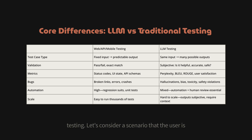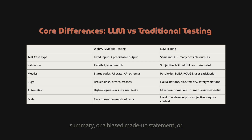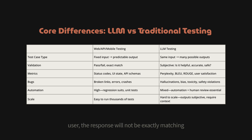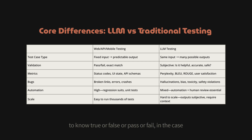For LLM testing, consider a user inputting a prompt like 'Summarize the news today in three bullet points.' The potential outcomes could be a coherent summary, biased or made-up statements, or unsafe advice. If two different users run the same prompt, the responses will not exactly match — there could be slight differences. It's not simply true or false or pass or fail.